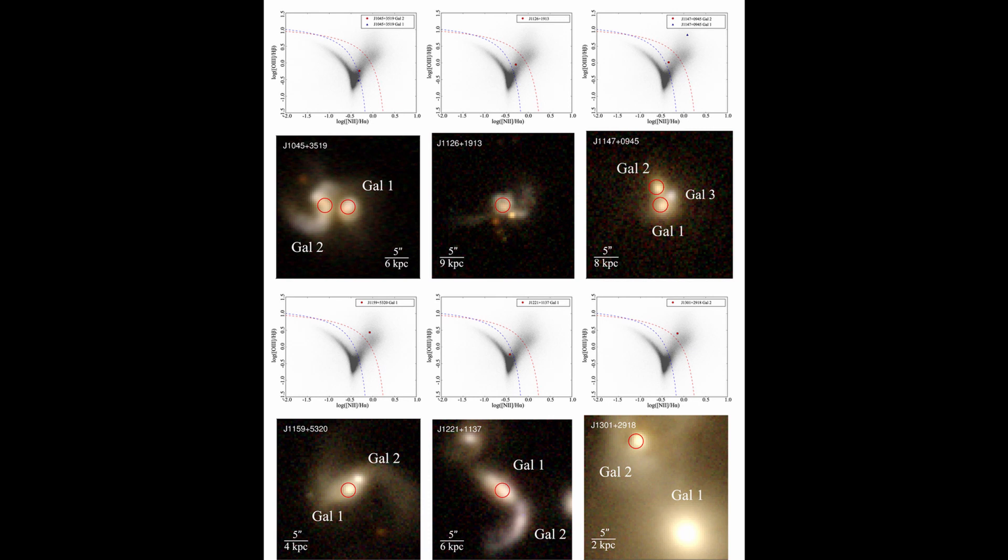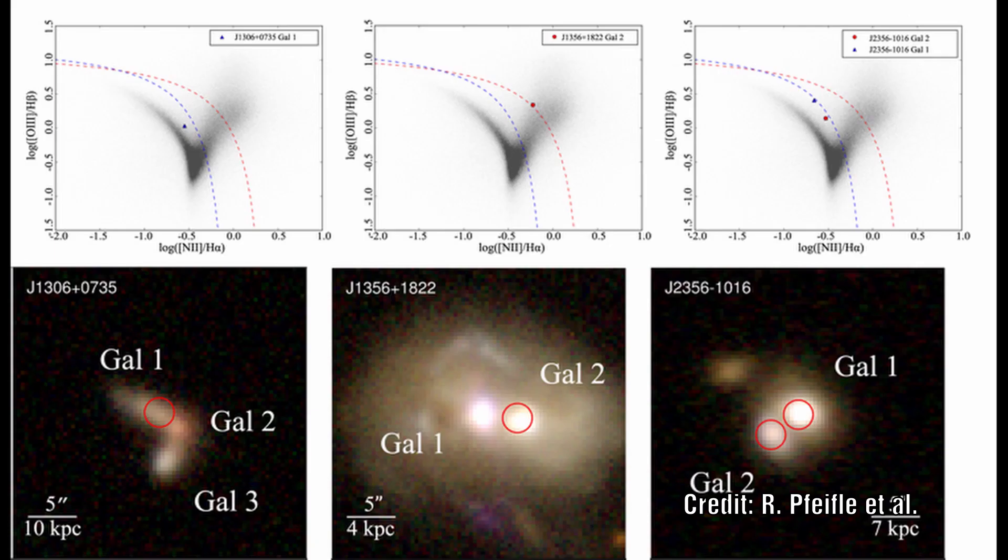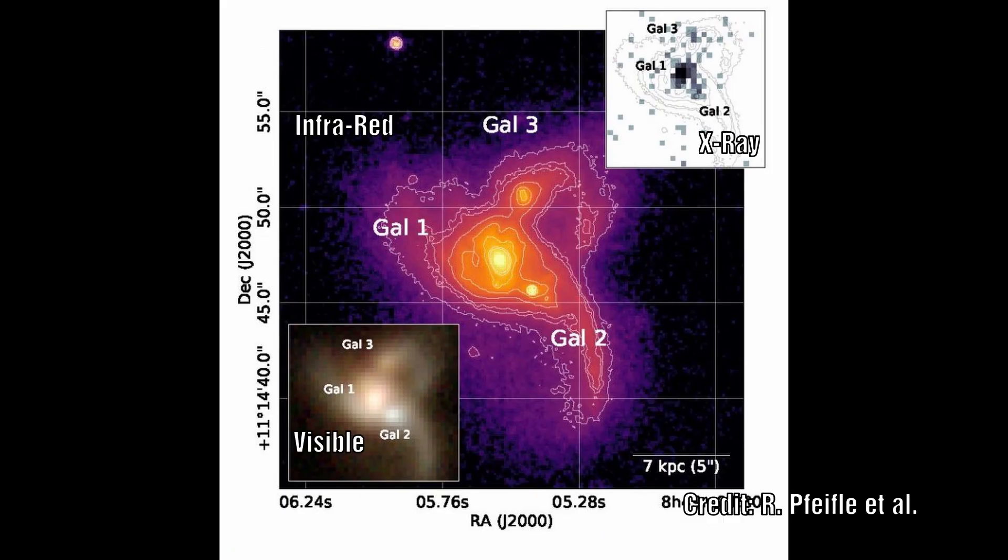So instead they hunt for them by looking for an infrared signature which would identify dust which has absorbed energy from the active galactic nuclei and then re-emitted it as infrared. They then follow up these observations by looking at the X-ray image to confirm the energy signature.